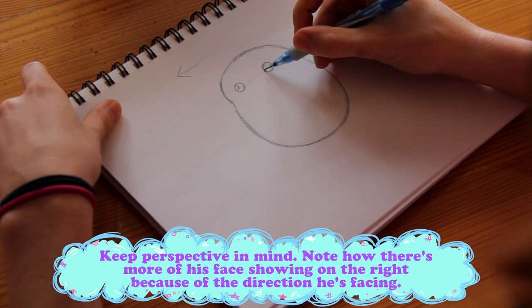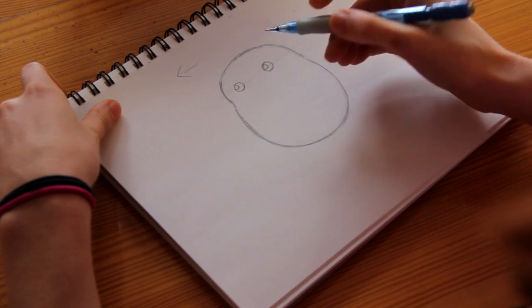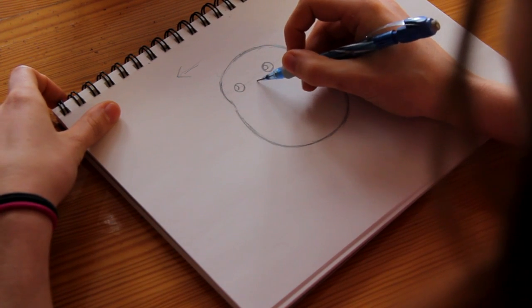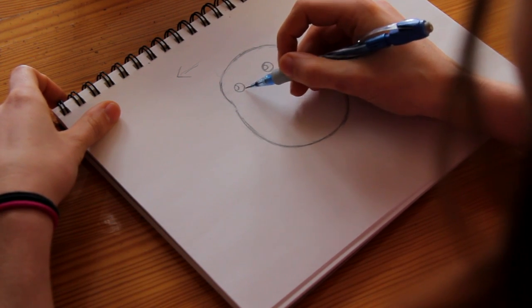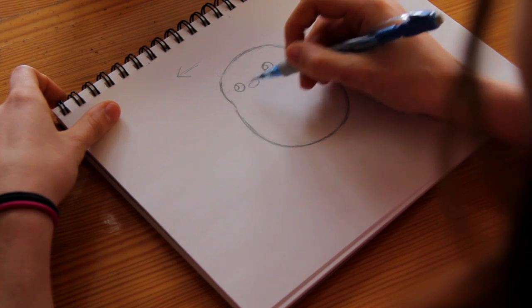And he's got a little eye shine, which is a half circle here. And then another half circle, same size, same shape, same everything. And he's got a little round nose.